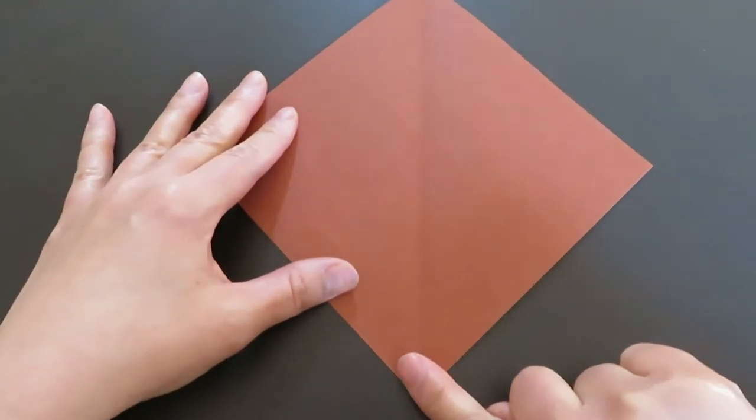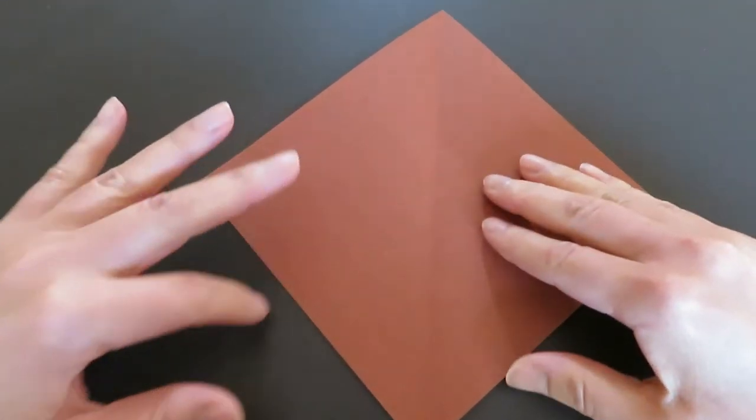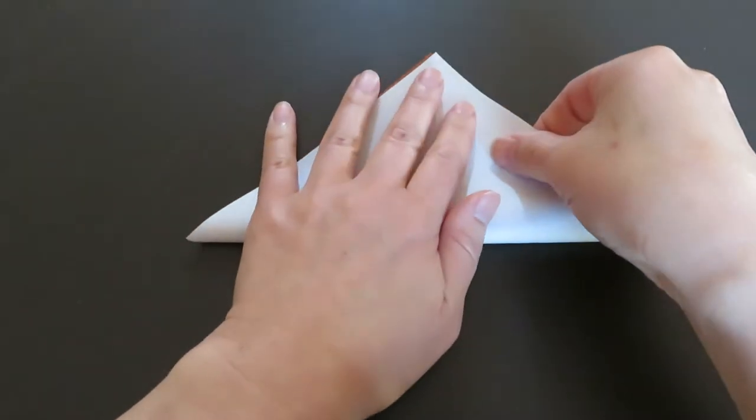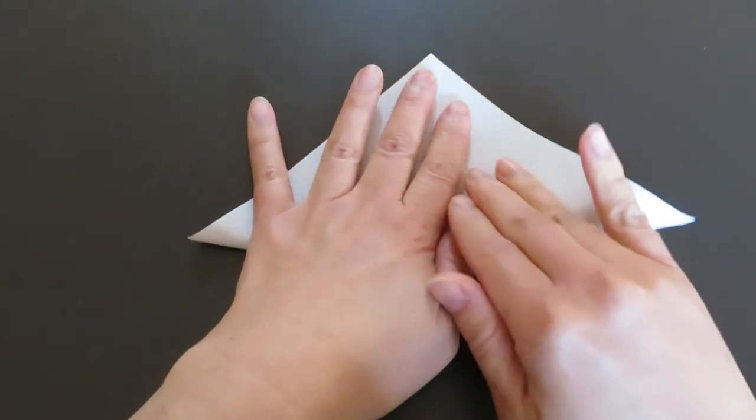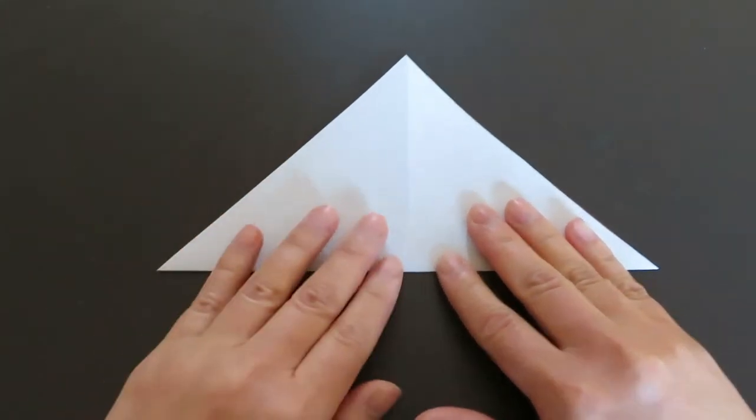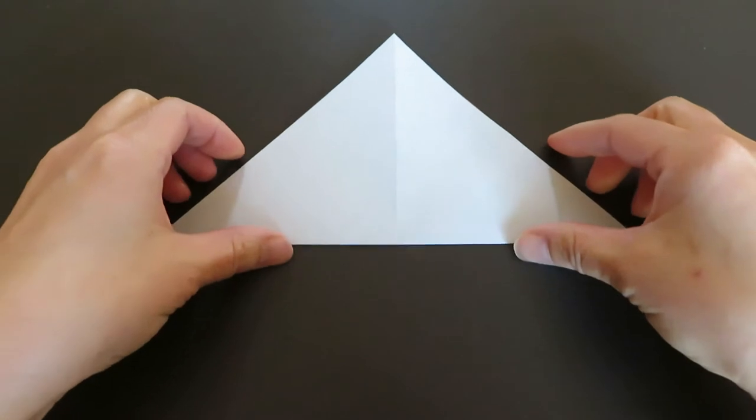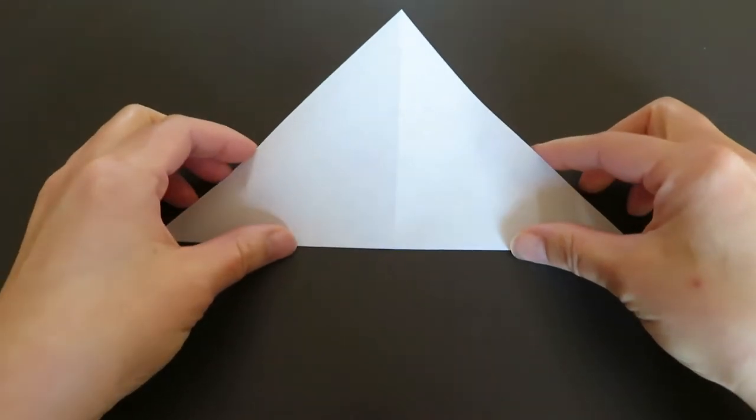Now match this bottom corner and top corner by folding up a triangle again. And open it up.